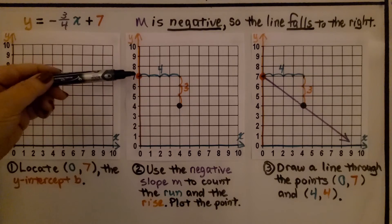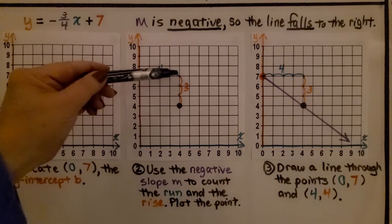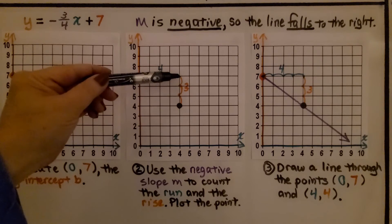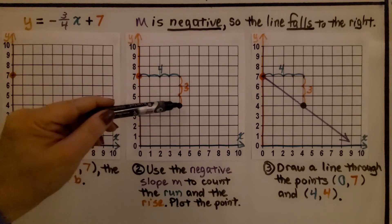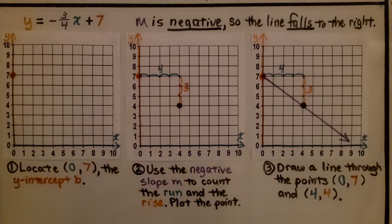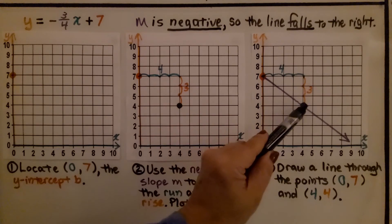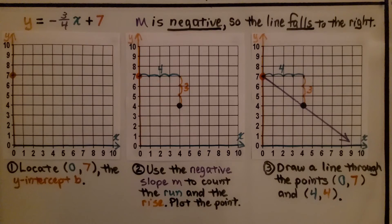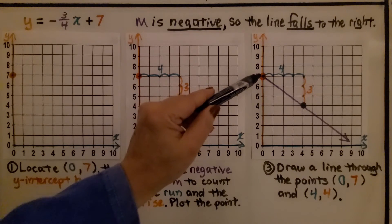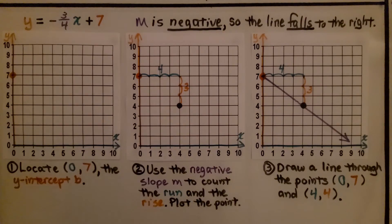So we're going to go across 4: 1, 2, 3, 4. But now we're going to go down 3 because it's negative: 1, 2, 3. That puts our point right there, and we plot the point. Next thing we do is draw a line through those points and continue. It's going to be (0, 7) for the first ordered pair and (4, 4) for the second ordered pair.